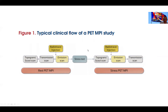A typical PET MPI workflow begins with a CT scout transmission scan, followed by tracer injection and emission perfusion imaging. The pharmacological stress test — most commonly with regadenoson, adenosine, or dipyridamole — is then performed, followed by a second CT and emission scan. Our lab switched to regadenoson years ago; it provides a single-dose, straightforward protocol. This entire rest-stress protocol can be completed in approximately 25 minutes door to door.